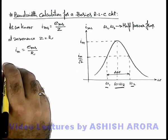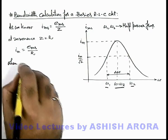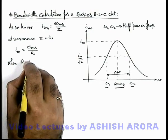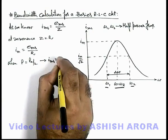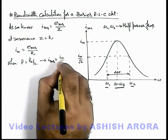So here we can write when power is equal to P max by 2, we know that current, RMS current in circuit will be I max by root 2.